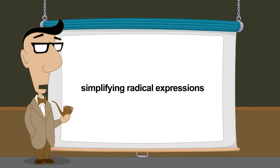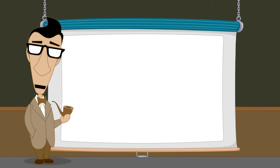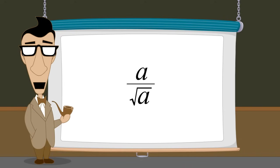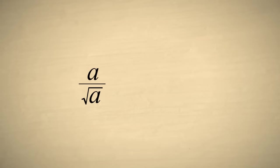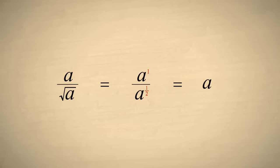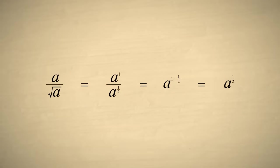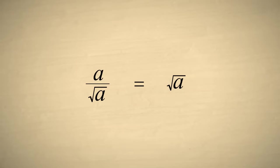Radical expressions can often be simplified by using the rules of exponents. For instance, let's simplify the expression a over the square root of a. We start by writing the square root of a as a to the one-half. If we write the a in the numerator as a with an exponent of one, we can subtract the exponents, giving us a to the one-half, or the square root of a. So a over the square root of a can be more simply written as the square root of a.